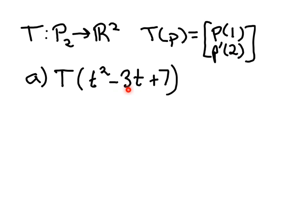In Part A, we're given a specific polynomial and asked to find T of this t²-3t+7 polynomial. So what you should do is find these entries, p of 1. We just substitute 1 into the given polynomial. So 1²-3×1+7 will give us 1-3, so -2+7, so 5.